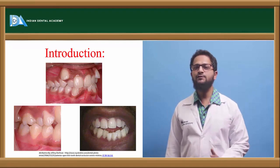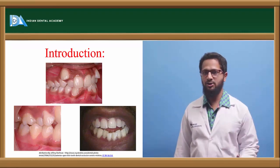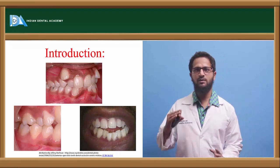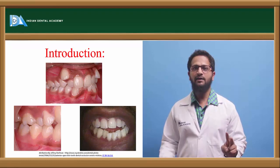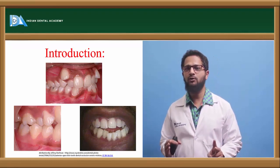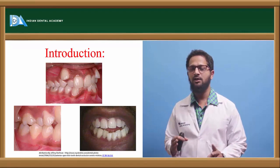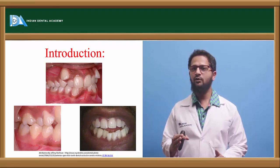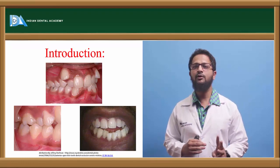Andrews gave six keys for normal occlusion. First, molar inter-arch relationship: the mesiobuccal cusp of the maxillary molar should occlude in the buccal groove of the mandibular molar. Second, mesodistal crown angulation: the gingival portion of the long axis of the crown must be distal to its occlusal part.